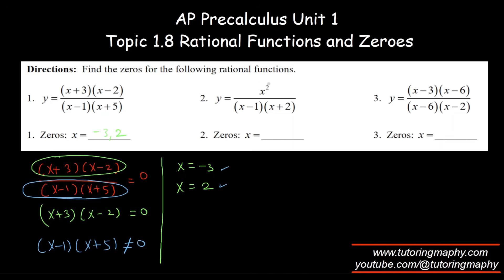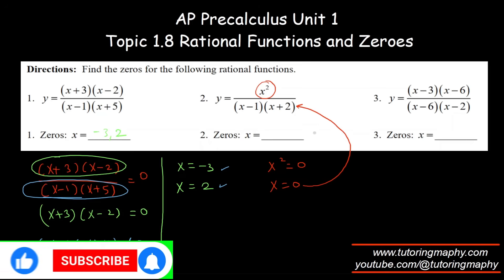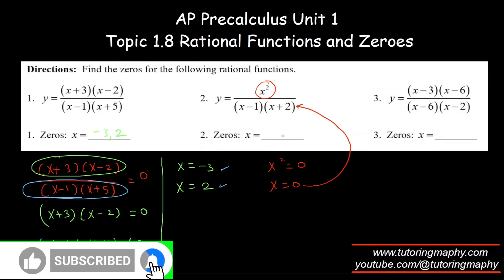For the second function, the numerator is zero when x squared equals zero, which means x equals zero. Plugging x equals zero into the denominator gives negative two, which is not zero. So zero is perfectly fine — it's allowed with no restriction.